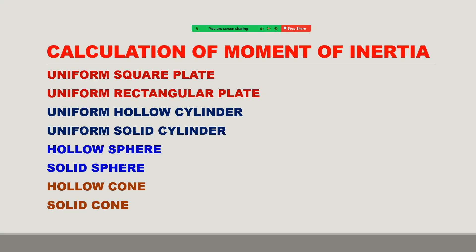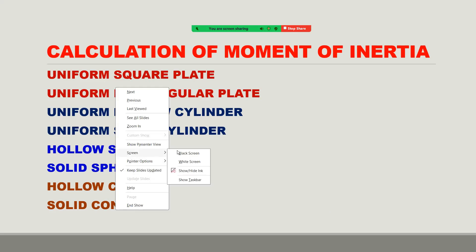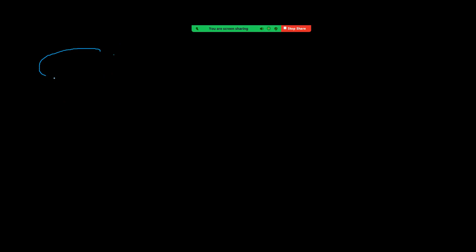Next is the hollow cone. See how to calculate moment of inertia for a hollow cone. Whenever we calculate moment of inertia we have to mention about which axis. Here we take the axis passing through the vertex and normal to the base.